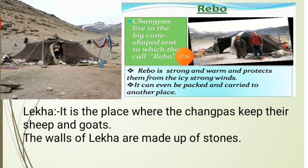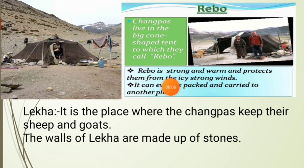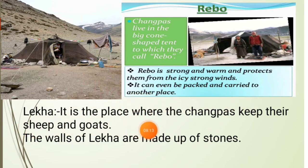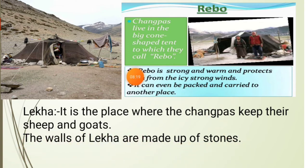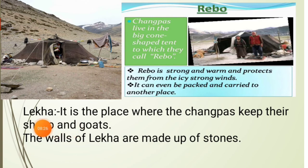The Changpas tribe live in a big cone-shaped tent which they call Rebo. The Rebo is strong and protects them from icy, strong winds. It can even be packed and carried to another place. Lekha is the place where the Changpas keep their sheep and goats. The walls of Lekha are made of stones. These are pictures of Rebo and Lekha, which are related to the Changpas tribe.